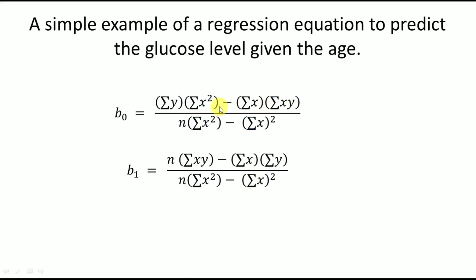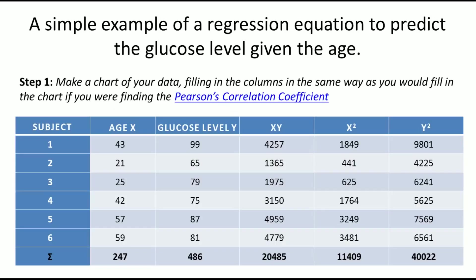We also need summation of xy and summation of x². To calculate xy, we multiply x by y for each row — for example, 43 times 99 gives 4257, and 21 times 65 gives 1365. Once we calculate all xy values and sum them, we get summation of xy equals 2485. Similarly, we calculate x² and y² for each row and find their summations.